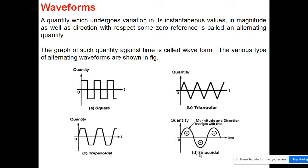Third, sine and cosine waves are the only waves which can pass through a linear circuit containing resistance, inductance, and capacitance without distortion. For other types of waveforms, there is a possibility of distortion when passing through a linear circuit. Another advantage is that the integration or derivative of a sinusoidal function is again a sinusoidal function, making the analysis of linear networks with sinusoidal inputs very easy.